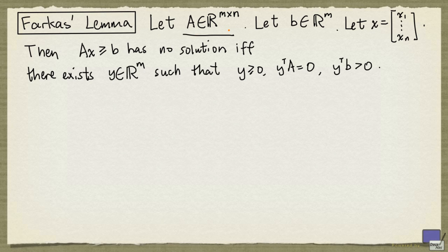So the problem data are as follows. We're given an m-by-n matrix A, an m-tuple B. Again, x is an n-tuple of variables, x1 up to xn.